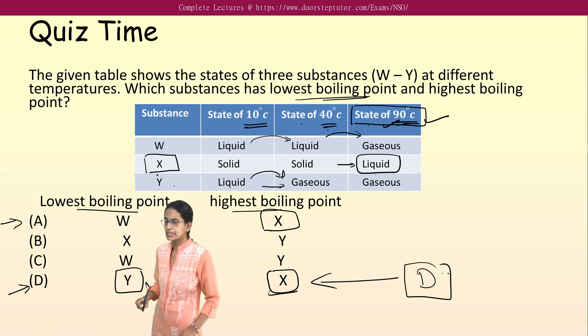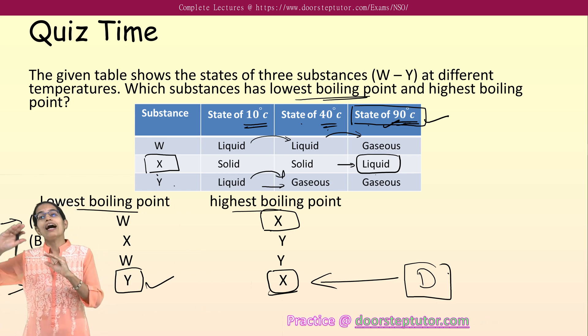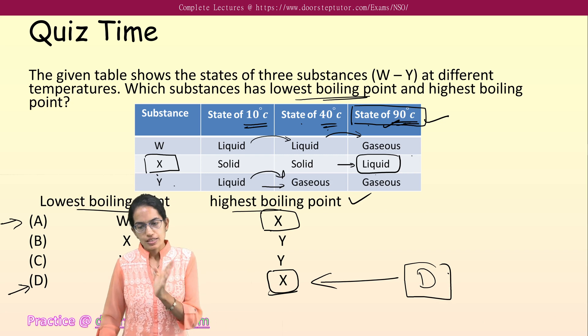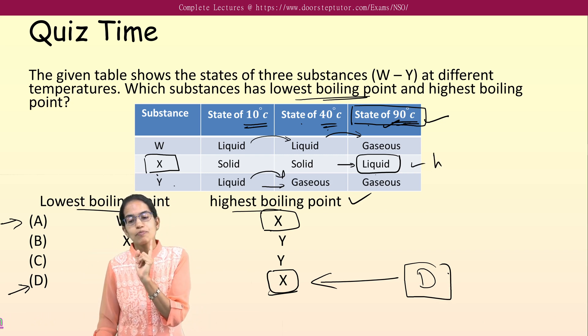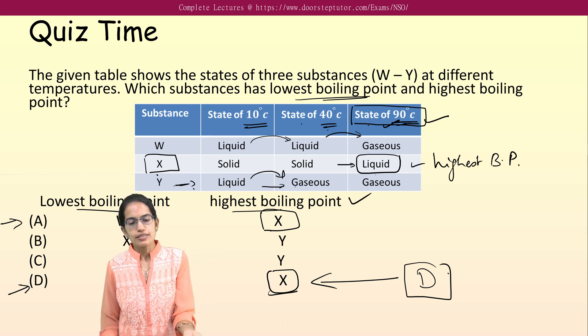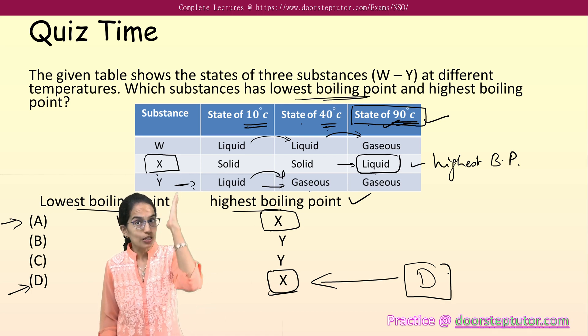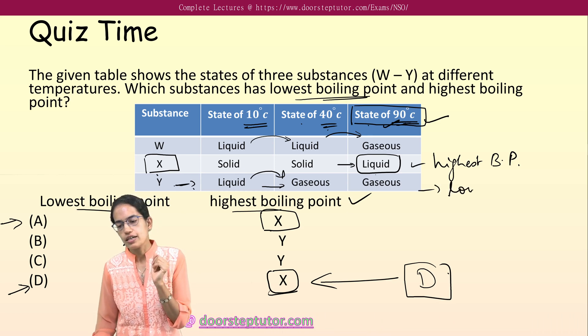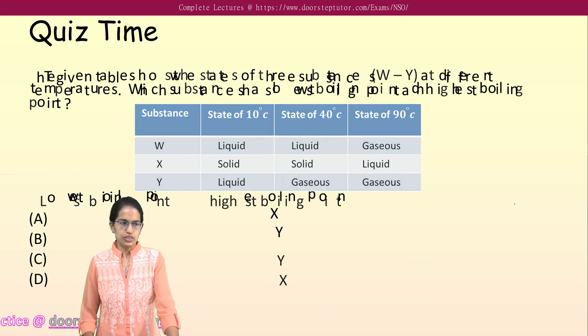Very important, I explain again. The substance which would remain liquid at the highest temperature would be the one which has the highest boiling point. It is liquid at 90 degrees Celsius also, and therefore it has the highest boiling point. However, Y turns out into a gaseous state only from 10 degrees to 40 degrees. Water boils at 100 degrees. It is turning out to gas at 40 degrees itself, so it has the lowest boiling point. And that's how you identify questions like these.